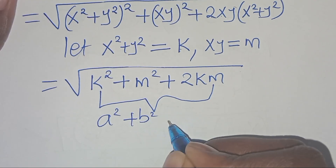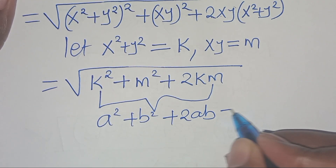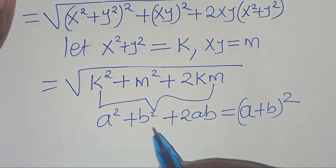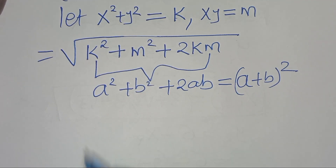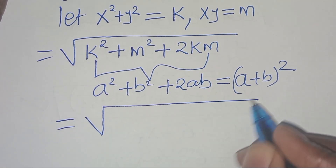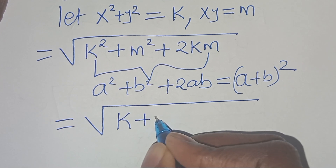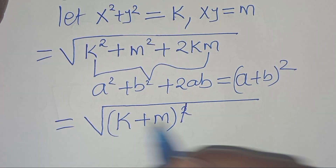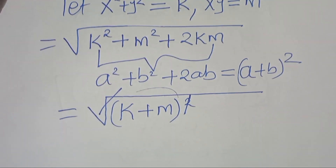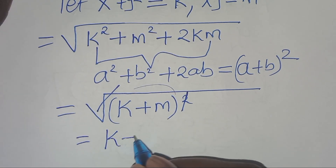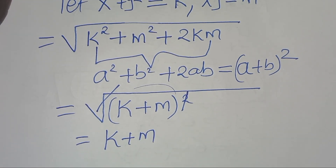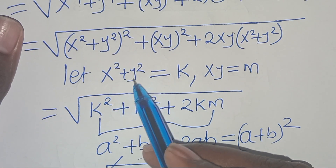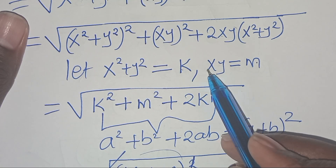We find that k squared plus m squared plus 2km is in the form of a squared plus b squared plus 2ab, which we can express as a plus b, all squared. Applying this algebraic identity, we have the square root of k plus m, all squared. Simplifying, this eliminates the square root sign, so this implies that we have k plus m. Recalling that k is equal to x squared plus y squared and m is equal to xy.